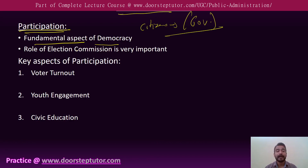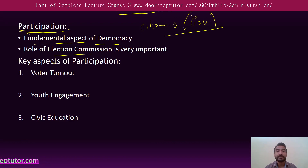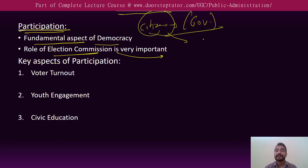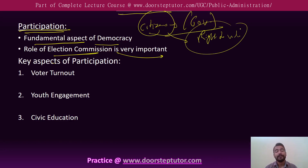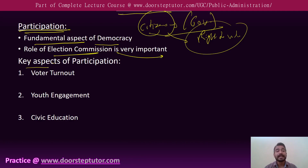In India, the Election Commission conducts elections at regular intervals to ensure that citizens can exercise their right to vote freely and fairly. The key aspects of participation include voter turnout, youth engagement, and civic education.